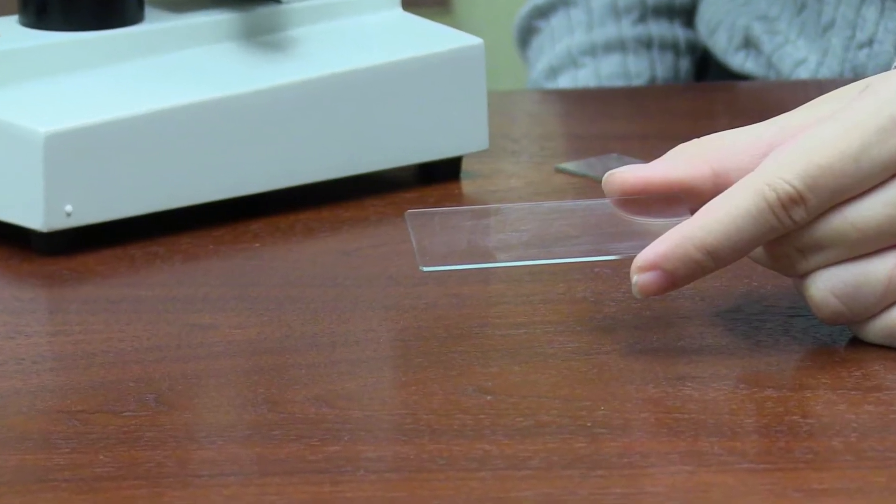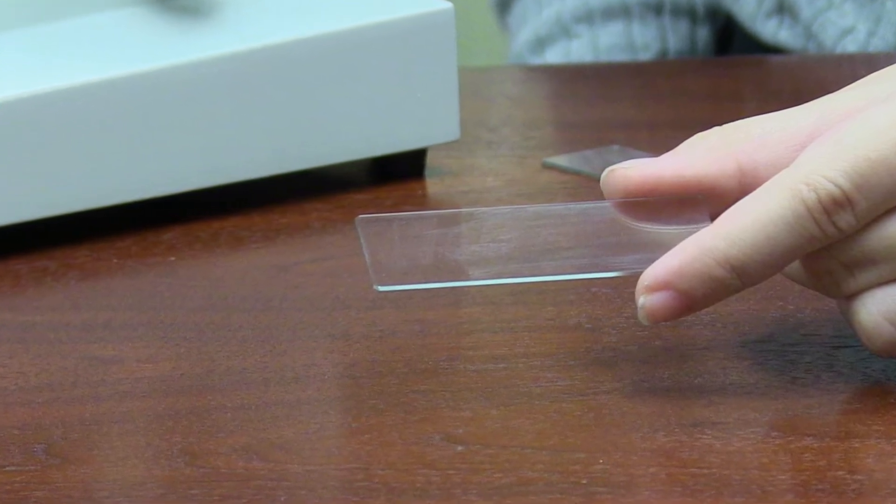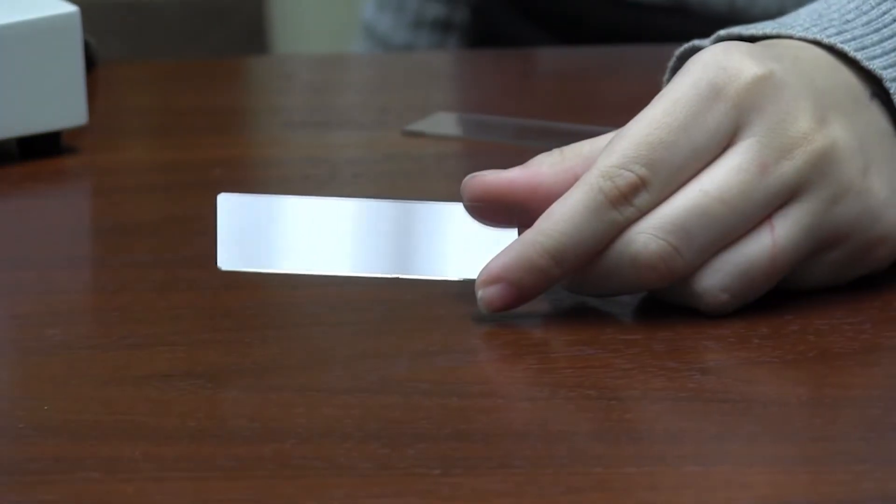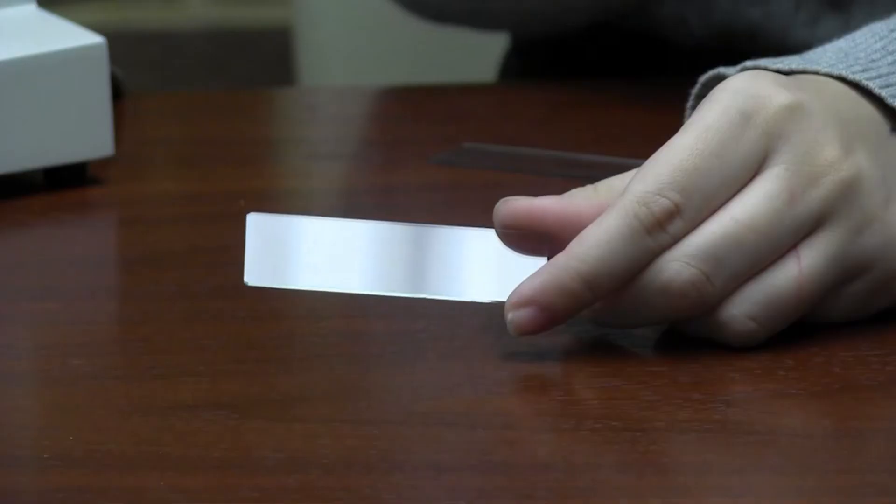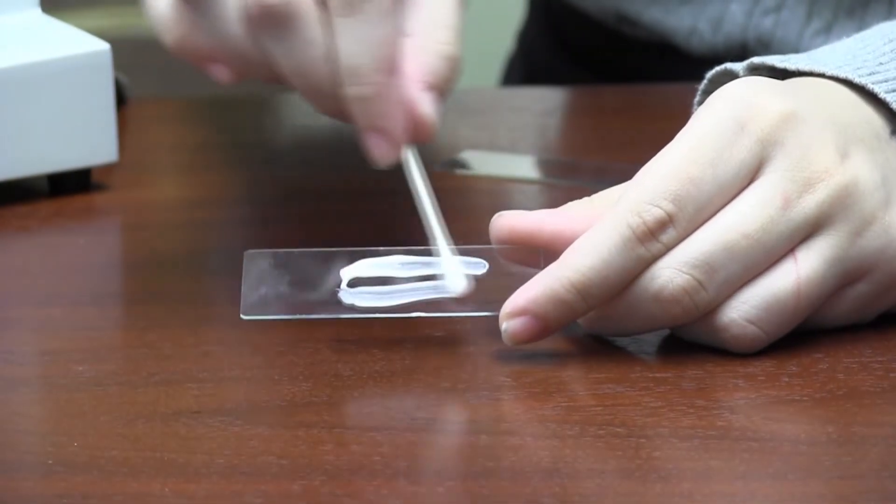To create a slide to view with the microscope, begin with a clean slide and cover slip, or a second slide. Handle this slide by the edges to avoid placing fingerprints on the surface. Use a swab to collect the substance you want to view and wipe it on the slide carefully.